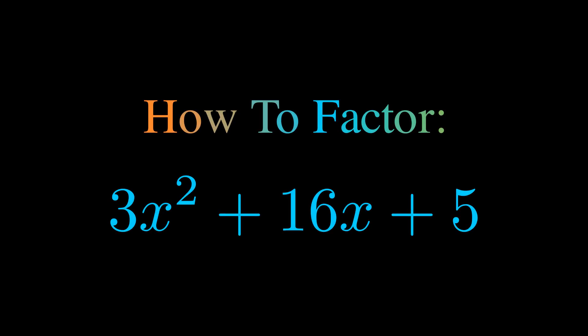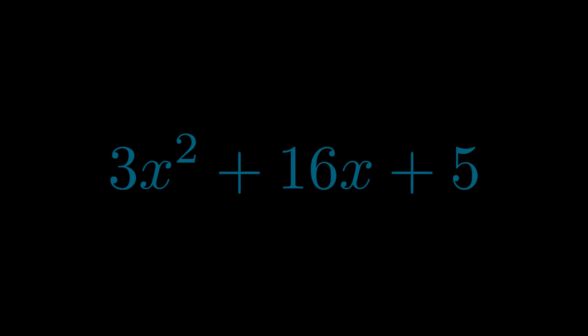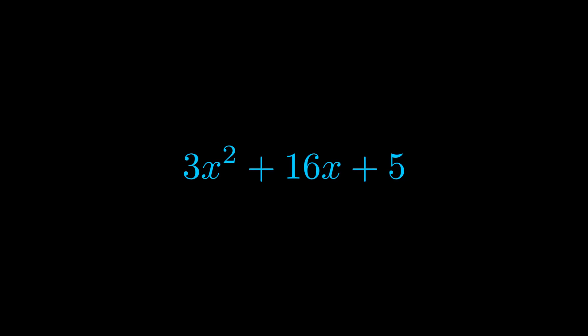In this video we're going to learn how to factor this equation. Step one when factoring an equation of this form is to multiply the a value by the c value. Here we can see that our a value is the coefficient on the x squared term and our c value is the constant term. When we multiply these two values we get this value here in magenta.